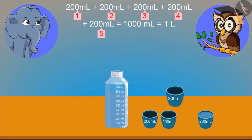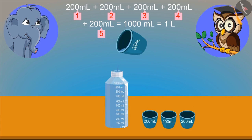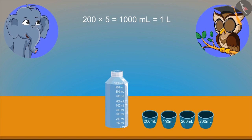So if in this bottle we pour 200 ml of water for 4 times, then it will become 1 liter. Very good, elephant. 5 times will make 1 liter.